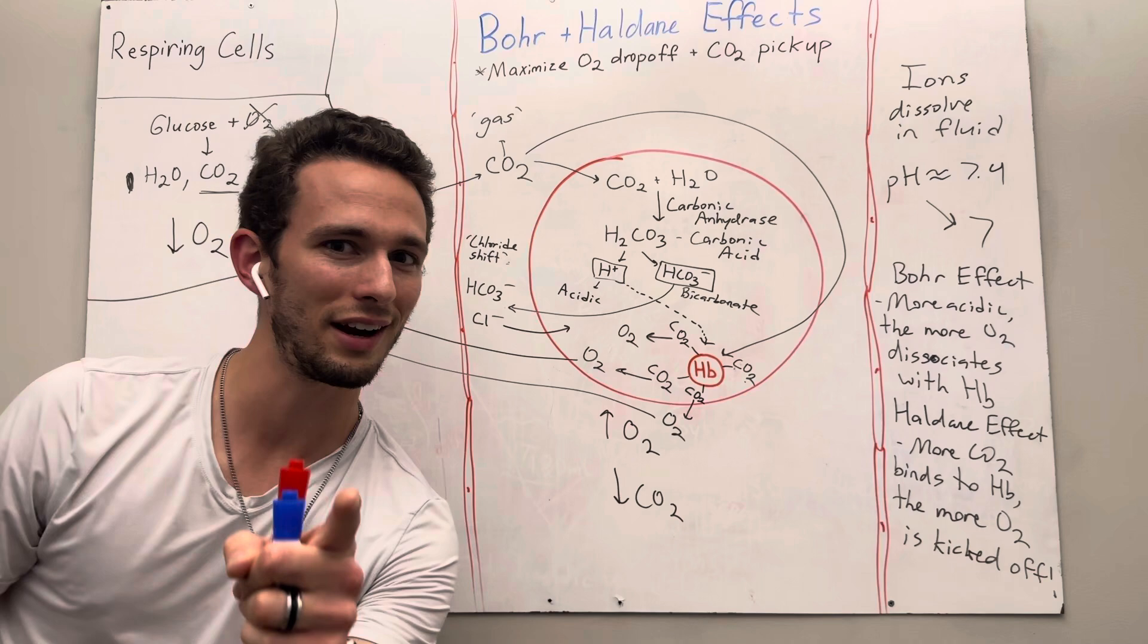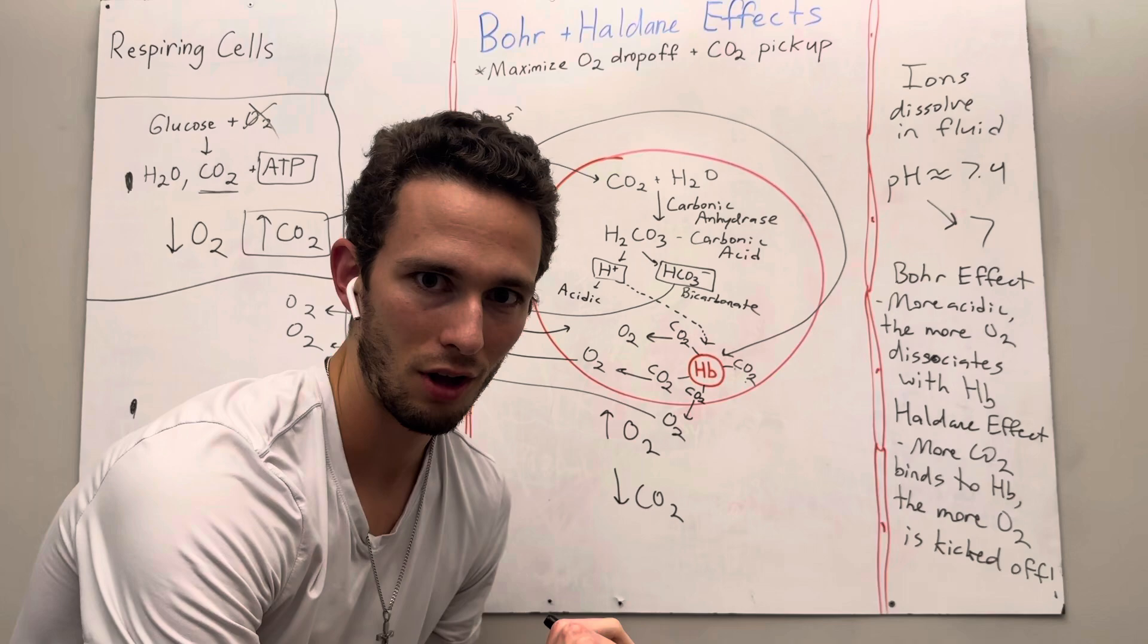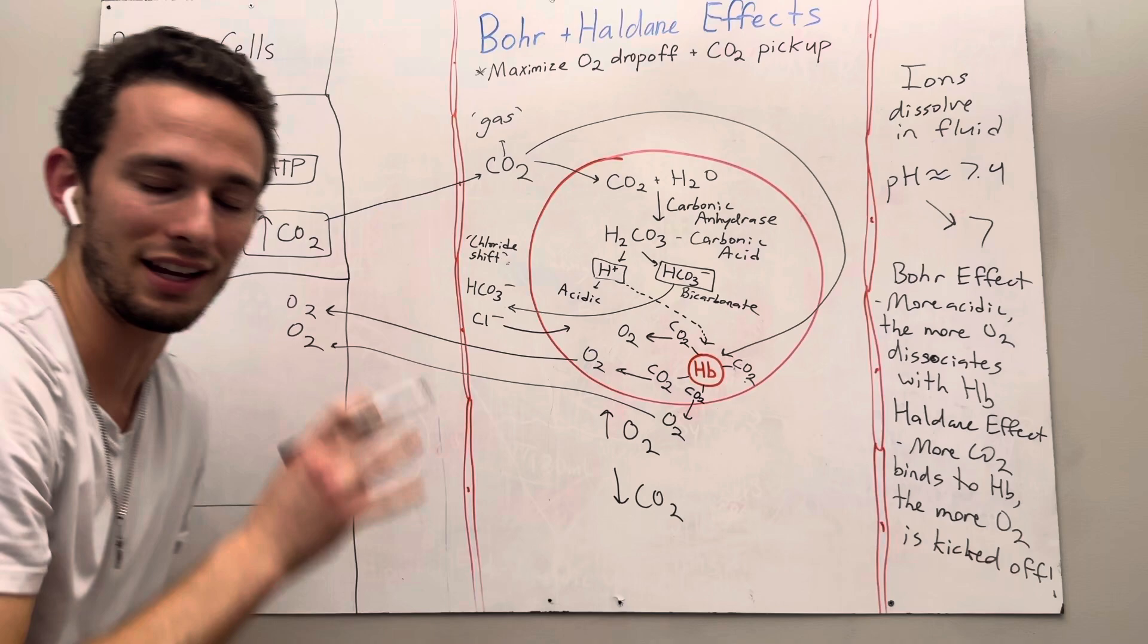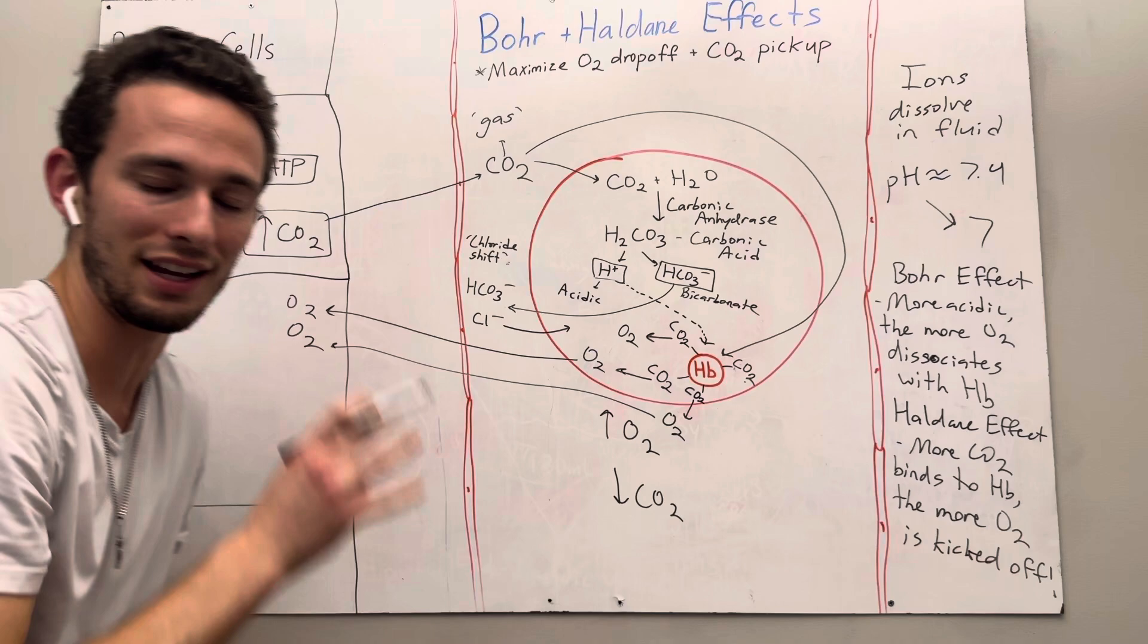Now, before I log out for the day, this blood cell will go to the lungs where this whole process will flip. So if you were to just take all of these arrows that I drew, flip them, that is what occurs at the alveoli in the lungs. So I'm going to make another video on what happens in the alveoli to amplify picking up oxygen and actually expelling carbon dioxide. But for today, this was the Haldane and the Bohr effects. Hopefully this is helpful. Please comment with any questions below and have a wonderful day.